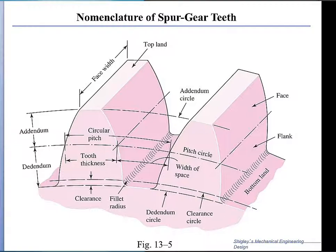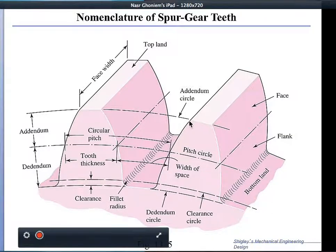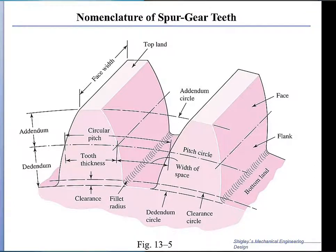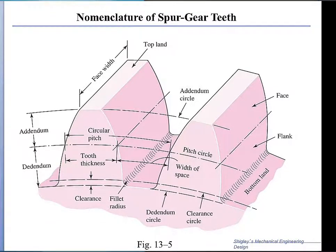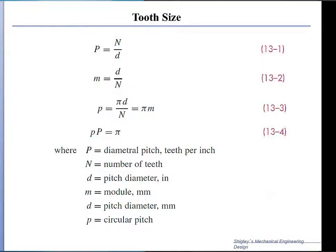Each tooth has a profile that is very important. This profile is obtained by a process called the involute process, which we will talk about. The involute makes that profile, and the profile can be divided into two parts: one part is the flank, and the other part is the face. That is a full description of the gear system. The number of teeth per unit inch is capital P, so capital P is the diametral pitch.